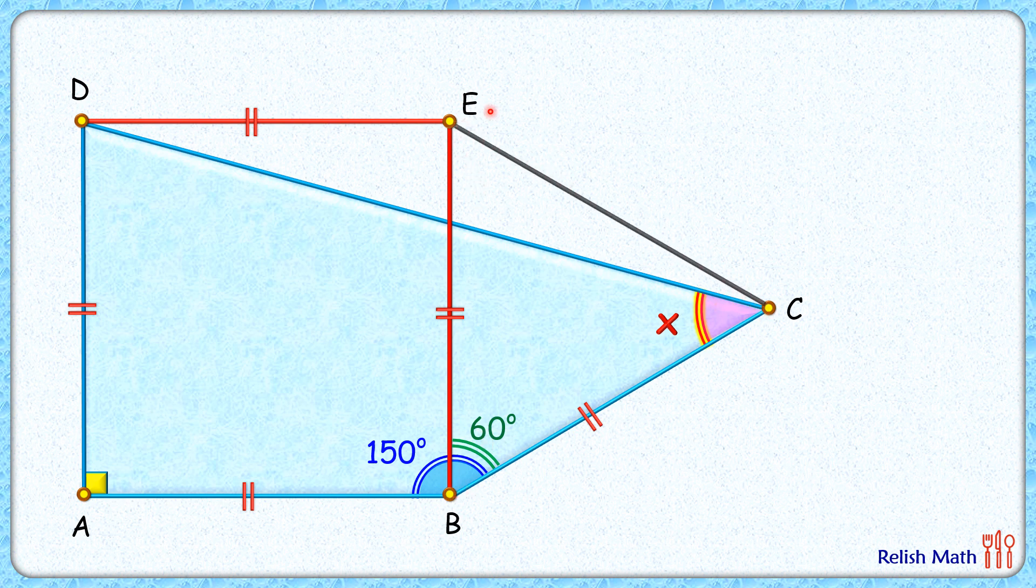Now this triangle BCE, it's an isosceles triangle, and angles opposite to equal sides are equal. So this angle here is equal to this angle. By angle sum property, each of these angles will be 180 minus 60 divided by 2, or 60 degrees each.